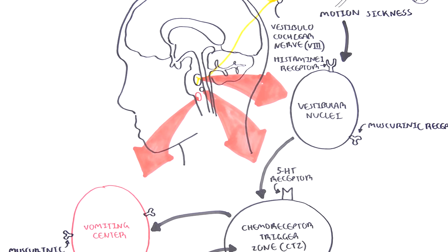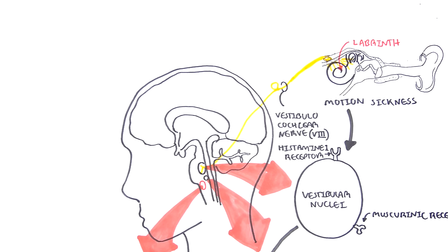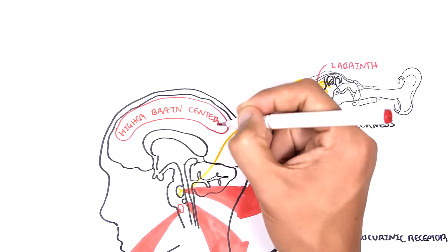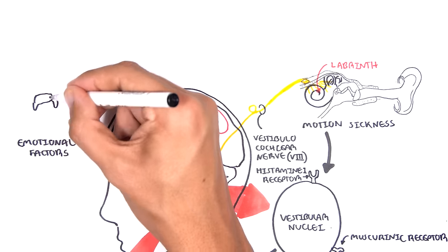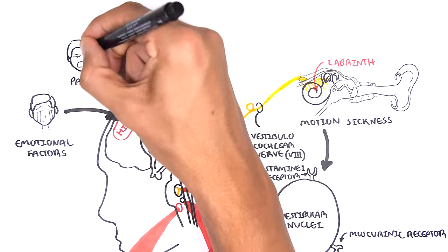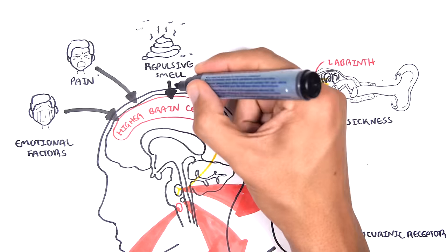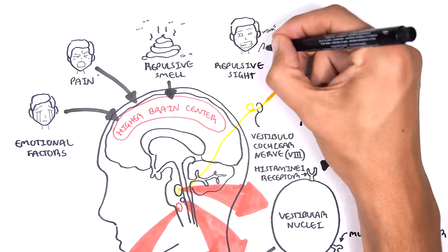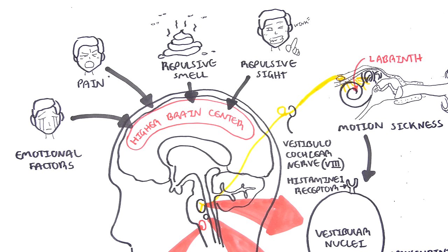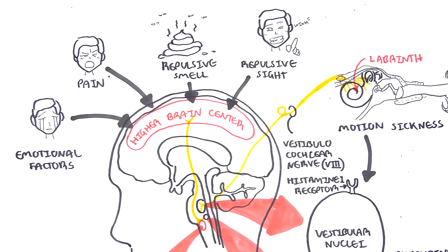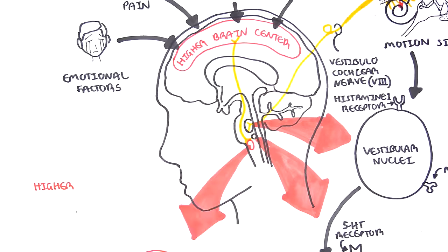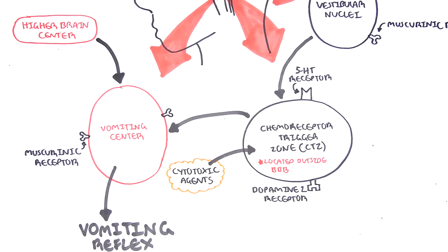Another cause of vomiting are things that occur from the cerebrum or the brain after it has processed sensory information. For example, when people are emotionally overwhelmed, in severe pain, smell something really bad, or see something repulsive, all this will get sensed by the higher centers of the brain. From the higher brain centers, this signal will travel down to the vomiting center to stimulate it and initiate the vomiting reflex. This makes sense because some people get really nauseous when they see blood or guts, or smell something like food that smells horrible. The higher brain centers stimulate the vomiting center through muscarinic receptors.